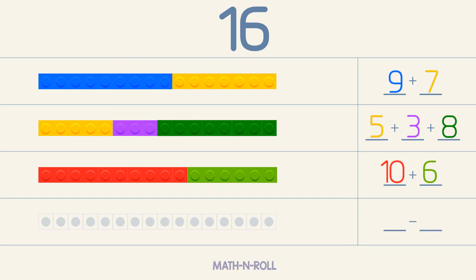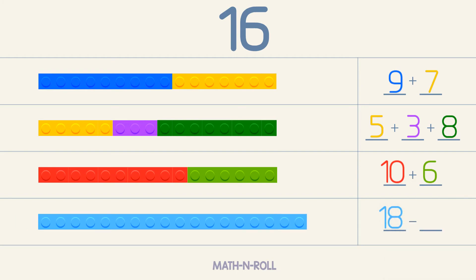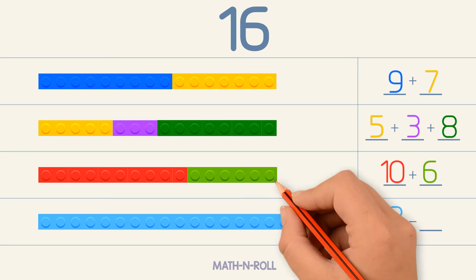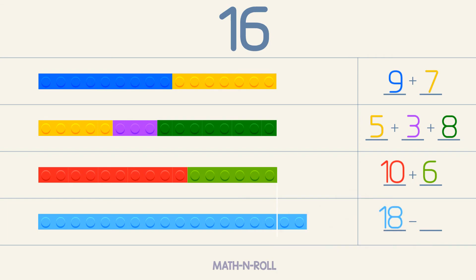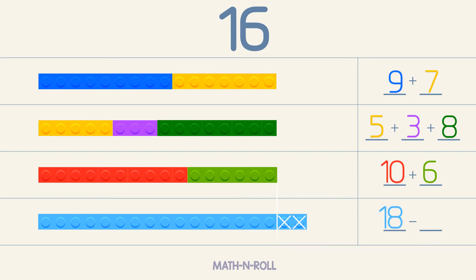We can also make 16 by subtracting. Take any number greater than 16. Let's take 18. To make 16, we have to remove 2 pieces. So 18 minus 2 equals 16.